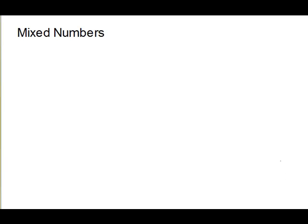Remember that mixed numbers have a whole number part and a fractional part. First we will review how to change a mixed number into an improper fraction. Let's convert 2 and 5 eighths into an improper fraction. First we're going to take the whole number times the denominator, add back the numerator, and the entire thing will go over the denominator. So 2 times 8 is 16.